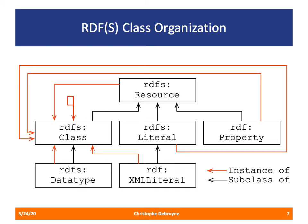RDFS is described in terms of itself. In this diagram, all the classes are related in two ways: the subclass-of relationship and the rdf:type relationship. For instance, xml:literal is a subclass of literal, and literal itself is a subclass of resource. Because RDFS is described in terms of itself, all rectangles are classes and are declared as being instances of RDFS class. So RDFS resource is an instance of RDFS class, and similarly, RDF xml:literal is also an instance of RDFS class.